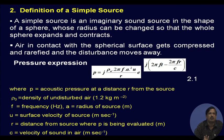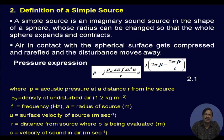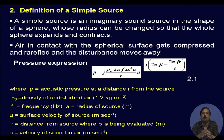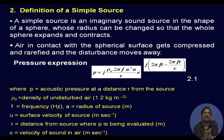A loudspeaker is nothing but a source of sound — it can be considered as a sound source. A simple source is an imaginary sound source, not practical, in the shape of a sphere whose radius can be changed so that the whole sphere expands and contracts. That is how sound is produced: the sphere contracts and expands, producing sound propagated as spherical waves in all directions.